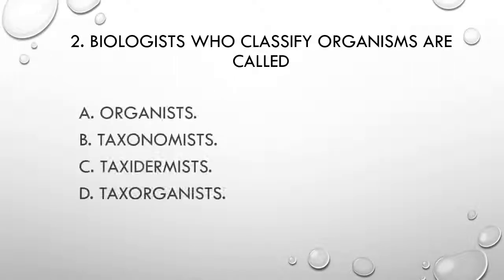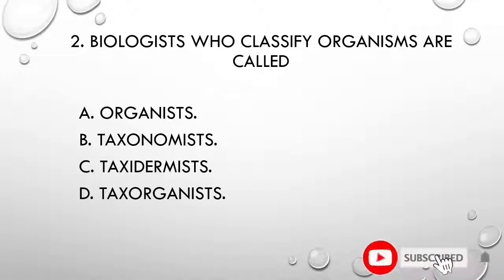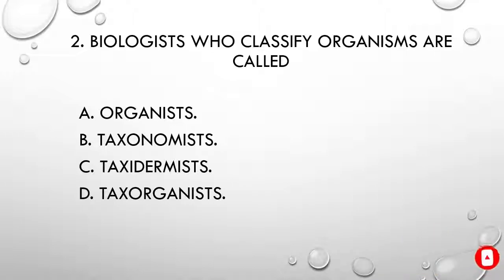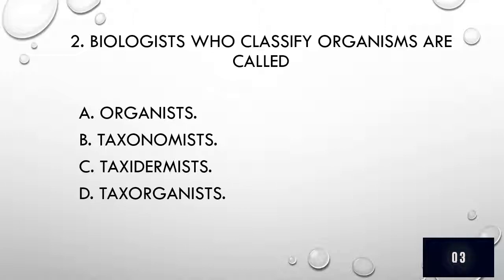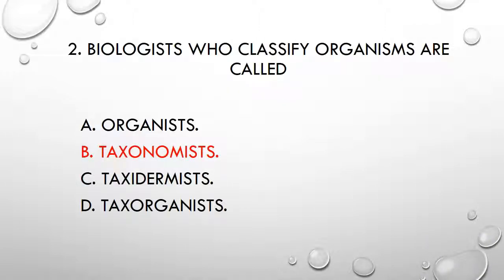Question 2. Biologists who classify organisms are called: A) organists, B) taxonomists, C) taxidermists, D) tax organists. The correct answer is B, taxonomists.